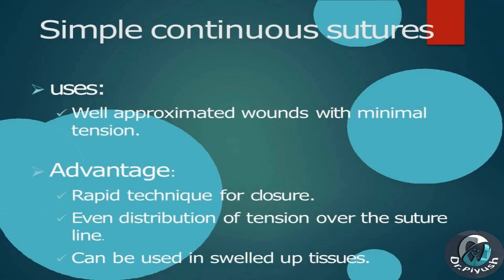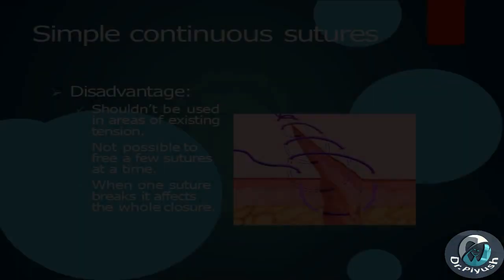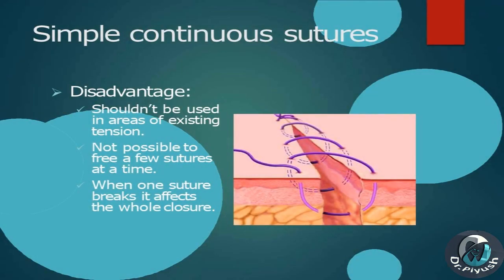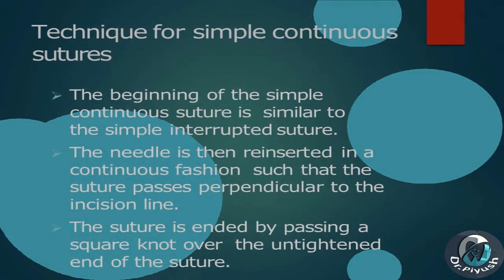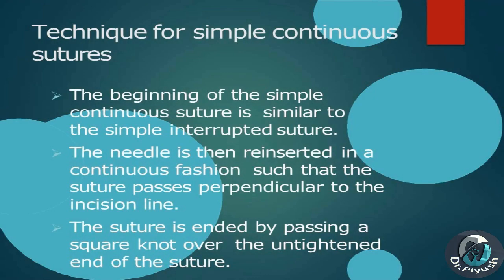Continuous sutures are of three types: simple continuous suture, locking continuous suture, and continuous over-and-over suture. Simple continuous sutures — Uses: well-approximated wounds with minimal tension. Advantages: rapid technique for closure, even distribution of tension over the suture line, can be used in swelled-up tissues. Disadvantages: should not be used in areas of existing tension, not possible to free a few sutures at a time, and when one suture breaks it affects the whole closure.